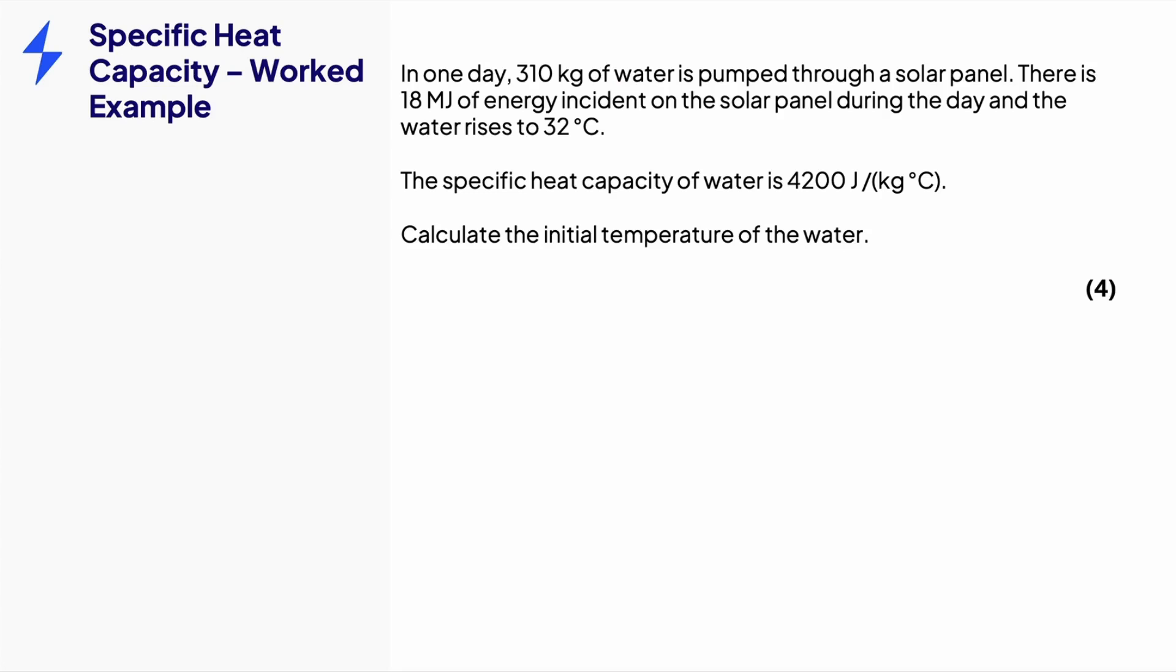First, we can see what variables have been given in the question. We have the mass, the energy, the final temperature, and the specific heat capacity. Next, write down the specific heat capacity equation. We need to rearrange this for delta theta, the change in temperature.